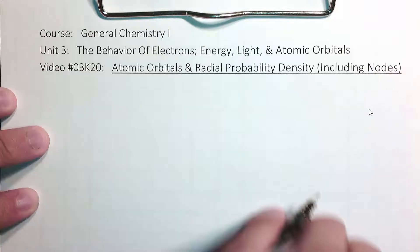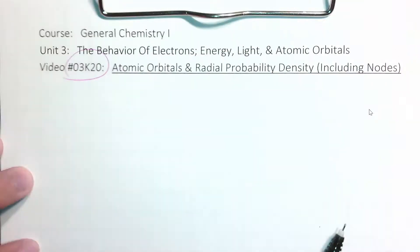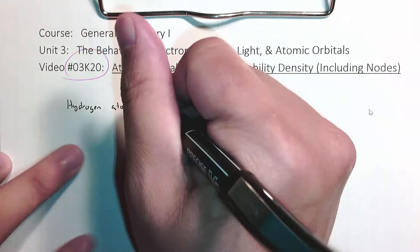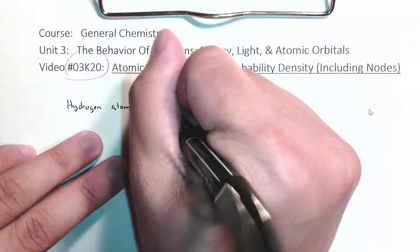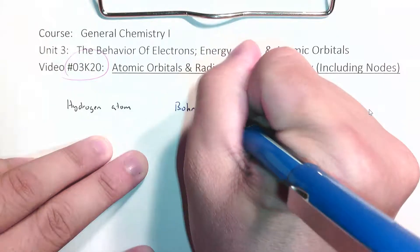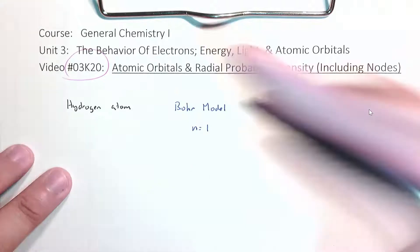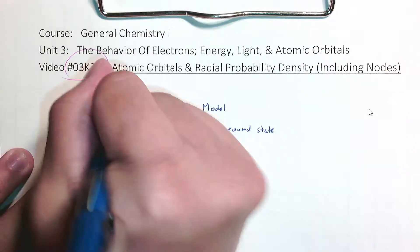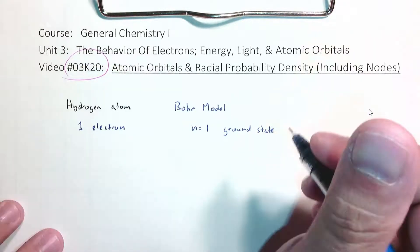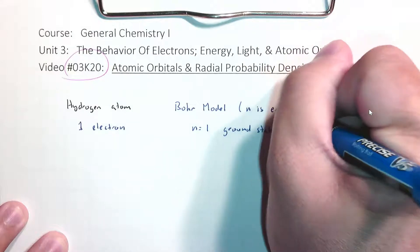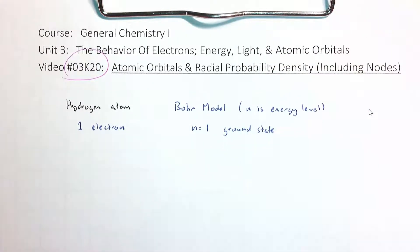A hydrogen atom has one electron, and the Bohr model predicts pretty well where that electron can be found. The Bohr model has those energy levels — n equals one, which we know as the ground state — and that electron can be pushed up to higher energy levels. Even though there were other chemists after Bohr that refined the model, the Bohr model is really good for hydrogen.